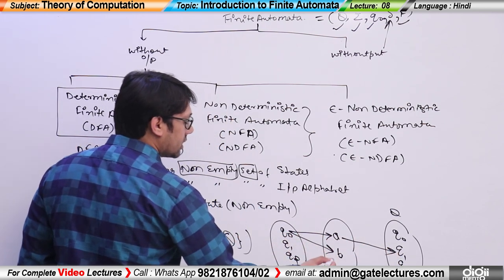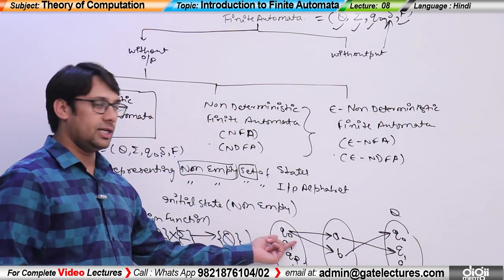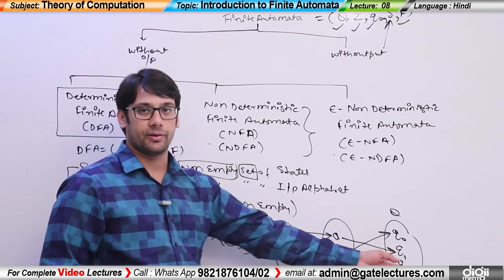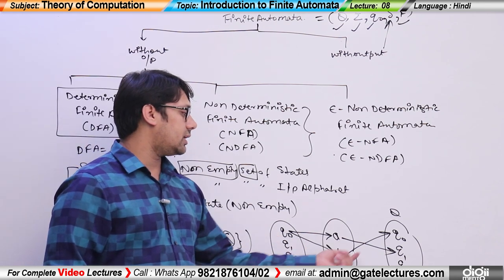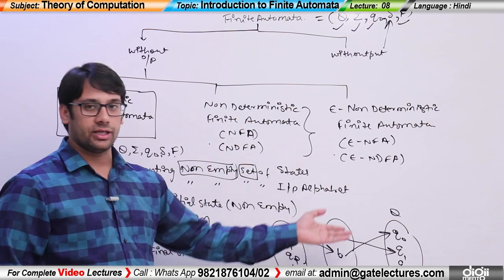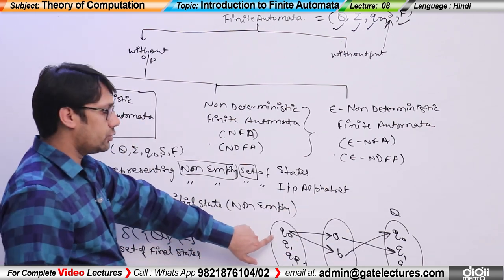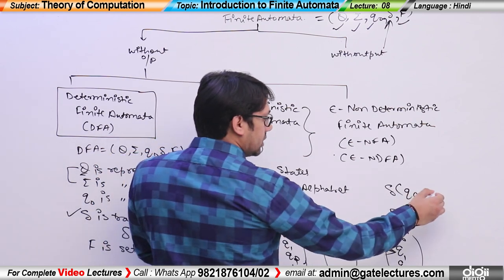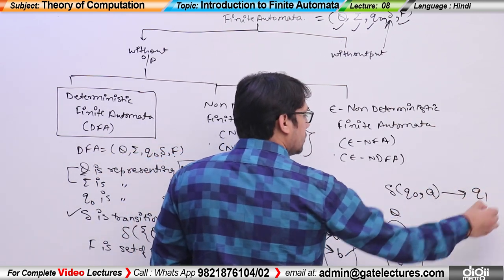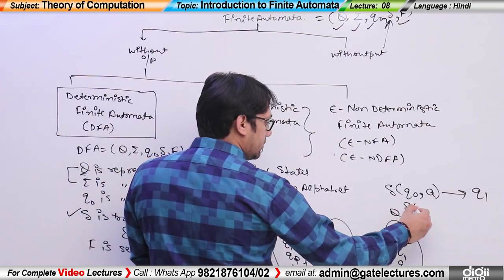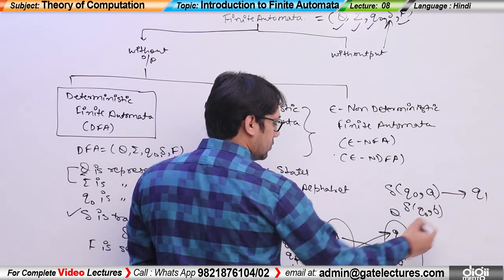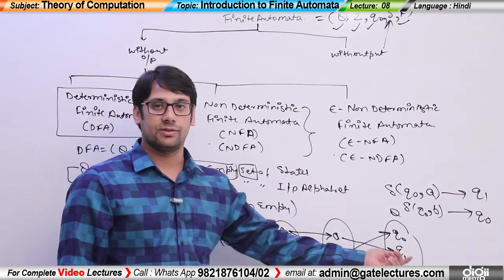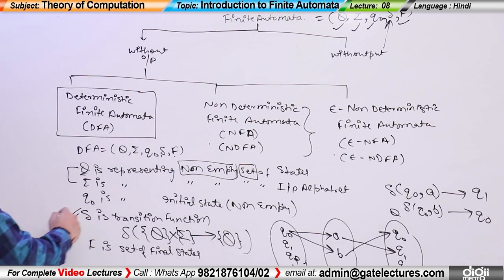For example: if you are on state q0 and you see symbol a, you go to state q1. Similarly, if you are on state q0 and you see symbol b, you go to state q0. So for every state we will have some transitions, and these transitions are defined by the delta function. For instance, delta(q0, a) = q1 means: if you are on state q0 and you see symbol a, you go to state q1. And delta(q0, b) = q0.